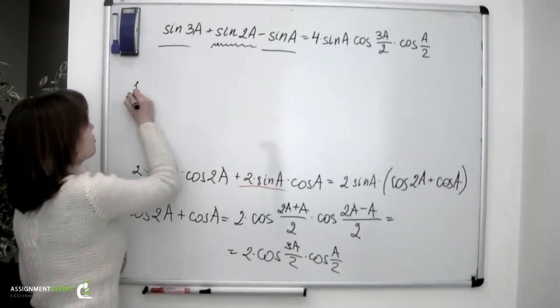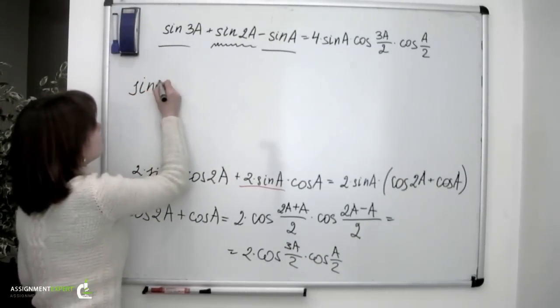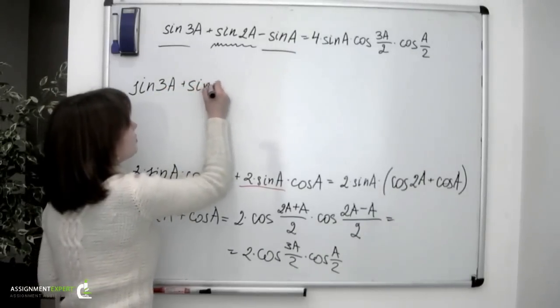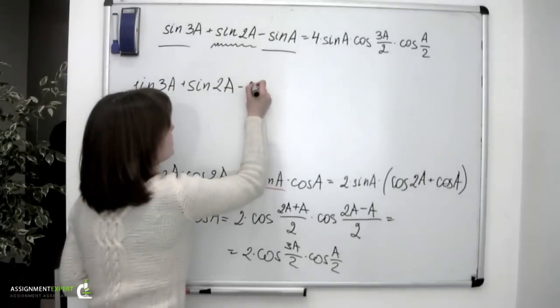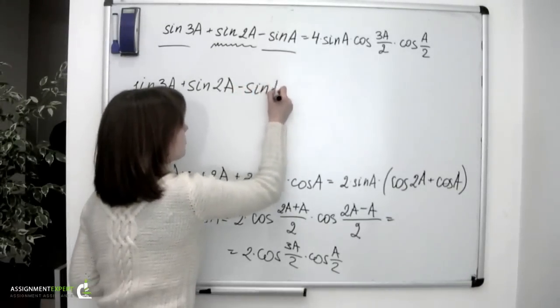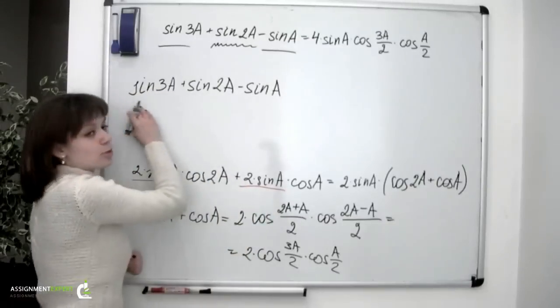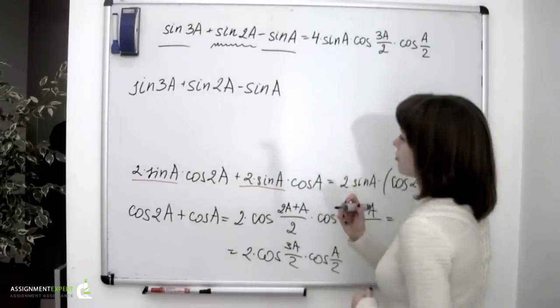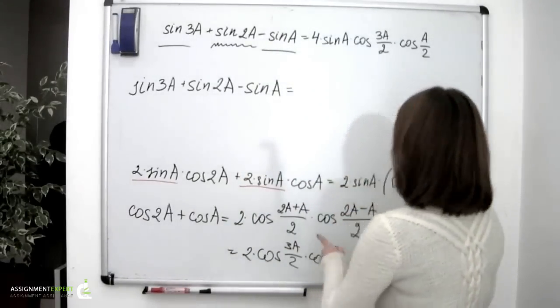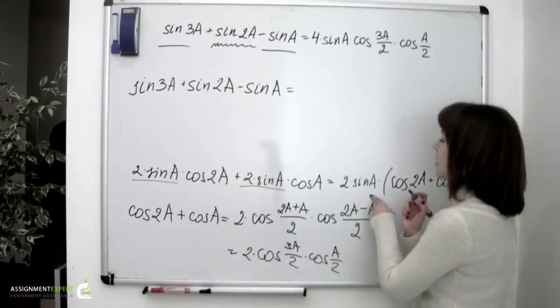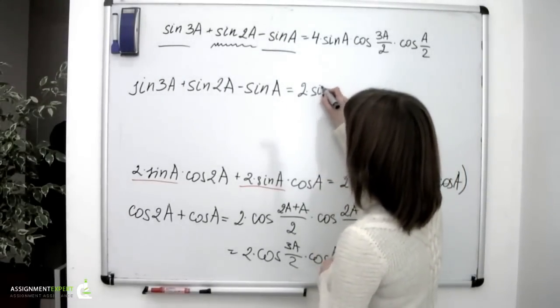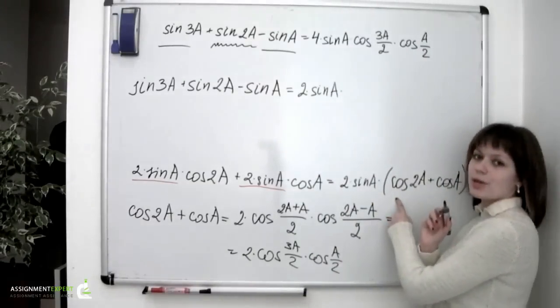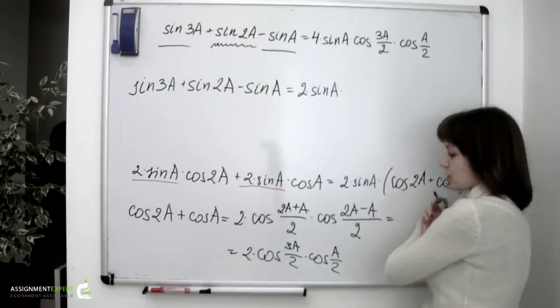So sine 3a plus sine 2a minus sine a. This is the expression we began from. Transformed into the following: 2 times sine a times the sum cosine 2a plus cosine a, which equals 2 times cosine 3a over 2 times cosine a over 2.